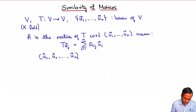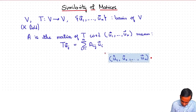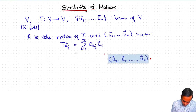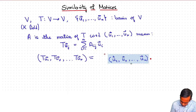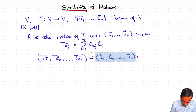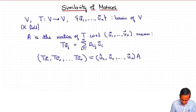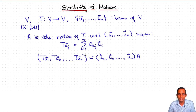What we are saying is: we can form the row vector of images under T — (Tu1, Tu2, ..., Tun) — and this vector equals the row vector (u1, u2, ..., un) times the matrix A. This identity in vector form is equivalent to the identity above, which can be taken as the definition of saying that the matrix of T with respect to the basis u1, u2, ..., un is A.